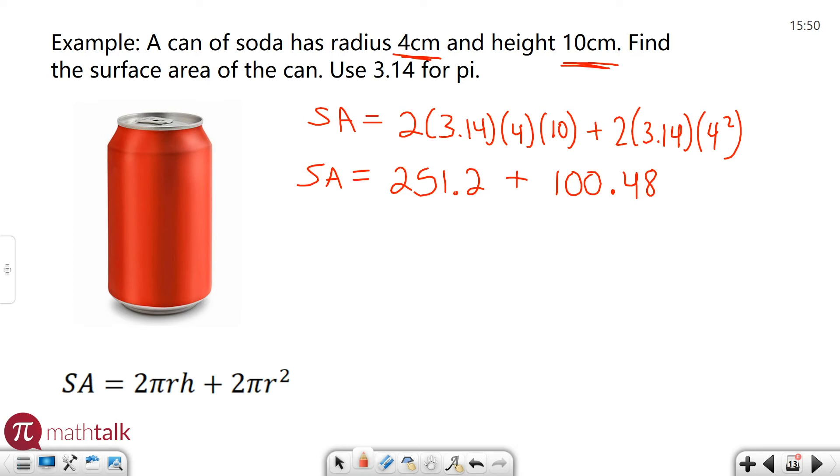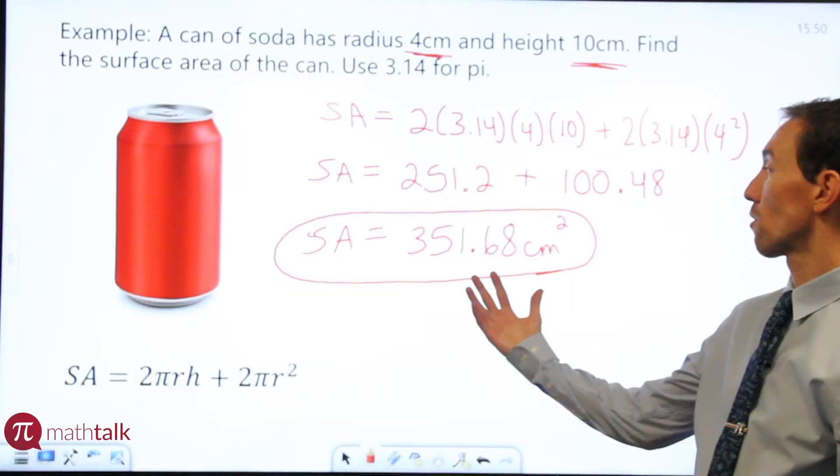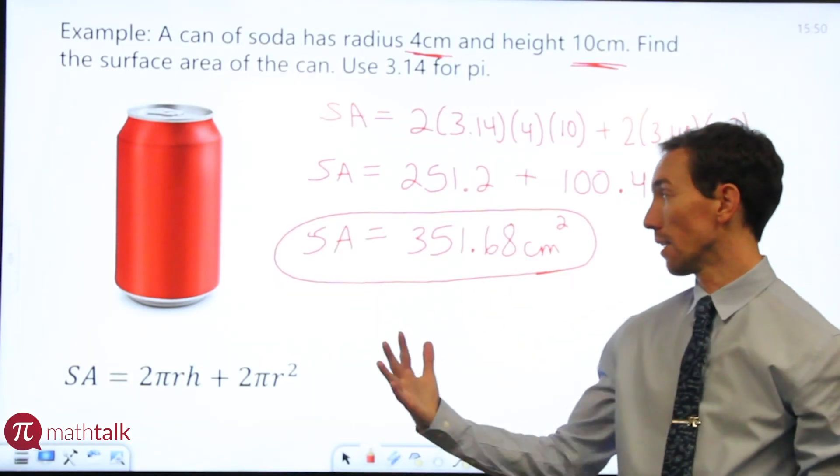And then we're going to add these two together. Surface area, you add those two together, you get 351.68. And again, we want to make sure we include our units correctly. We're talking about centimeters. And since we're talking about surface area, it's centimeters squared.